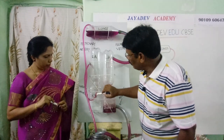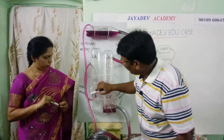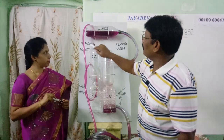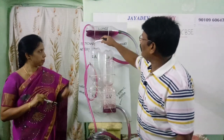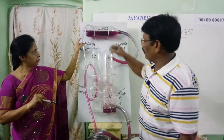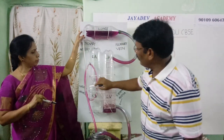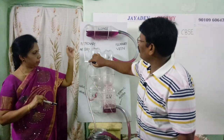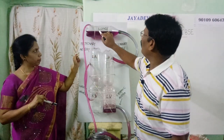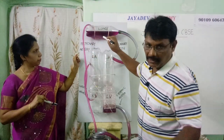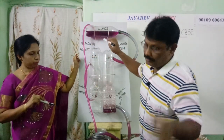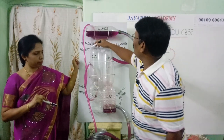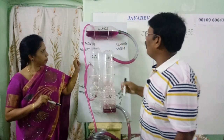The tricuspid valve prevents the backward movement of the deoxygenated blood. This deoxygenated blood enters into the right ventricle. From the right ventricle it is carried by one blood vessel — that blood vessel is called the pulmonary artery. Pulmonary artery carries the deoxygenated blood to the lungs for the purpose of purification.